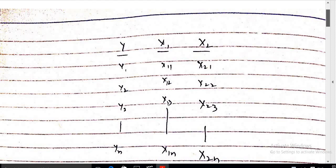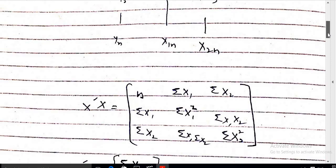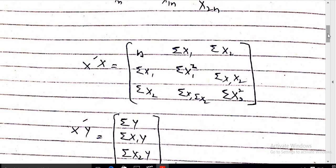If we have observations of dependent variables y1, y2, y3 up to yn, and x1 is equal to x11, x12 up to x1n, x2 is equal to x21, x22, x23 up to x2n, then we have to obtain the matrix of the product X transpose X.